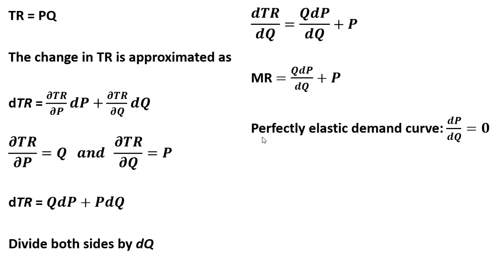Now let's start with the case where we have a horizontal or perfectly elastic demand curve. When we have a perfectly elastic demand curve, the slope of that demand curve, derivative of the price with respect to quantity, is just zero.